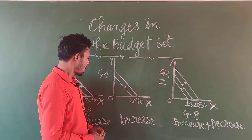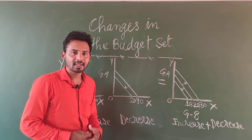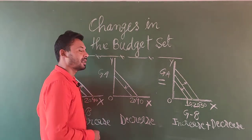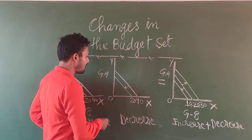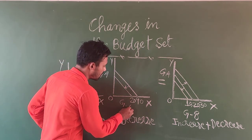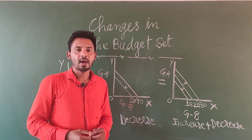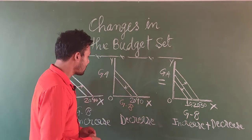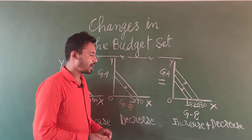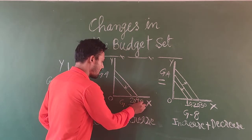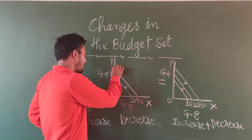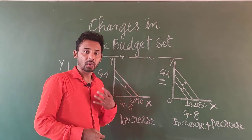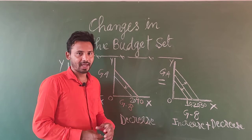In this graph we are going to discuss about the decrease in our budget. In the y axis we have good A and in the x axis we have good B. Suppose my original amount is rupees 40. My original budget line is this. My budget set is this. With this budget set I can buy good A and good B with the given price.